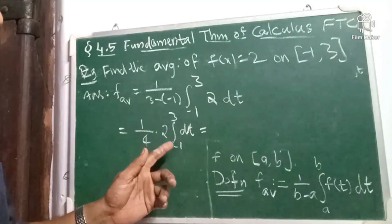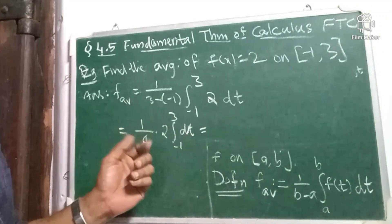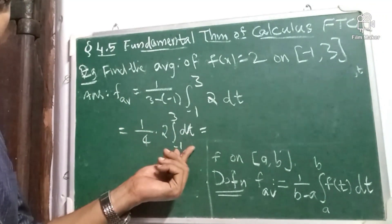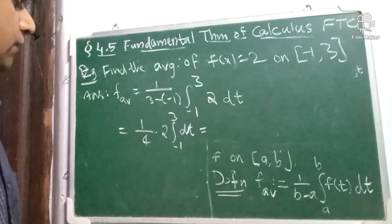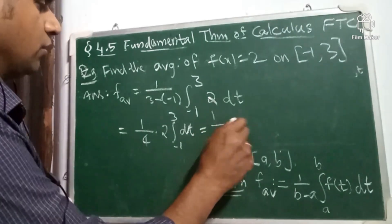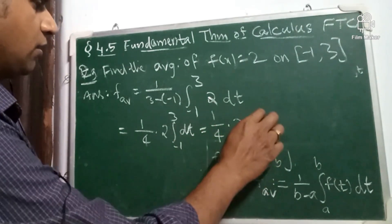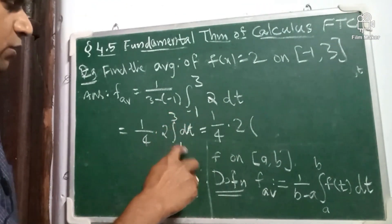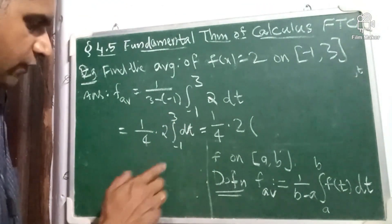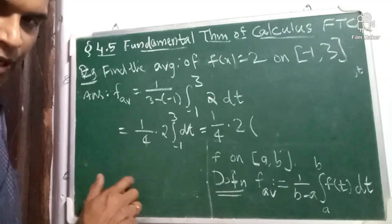What is integral -1 to 3 dt? It is precisely the length of the interval. So it is 1 by 4 into 2 into, what is the length of the interval? 3 minus minus 1. Again, that is length of an interval a, b is b minus a.